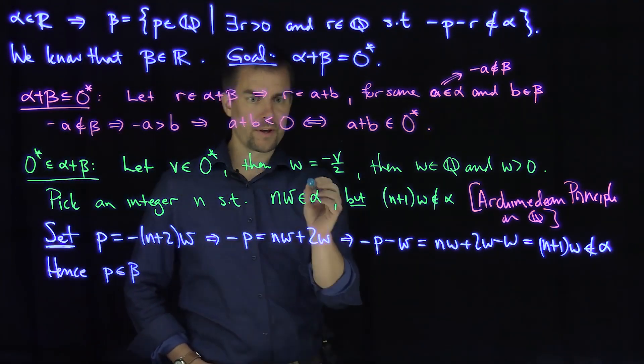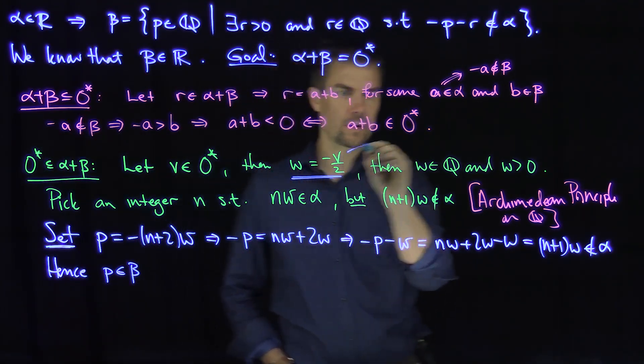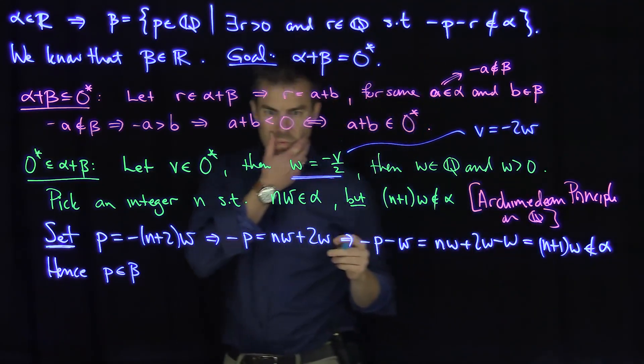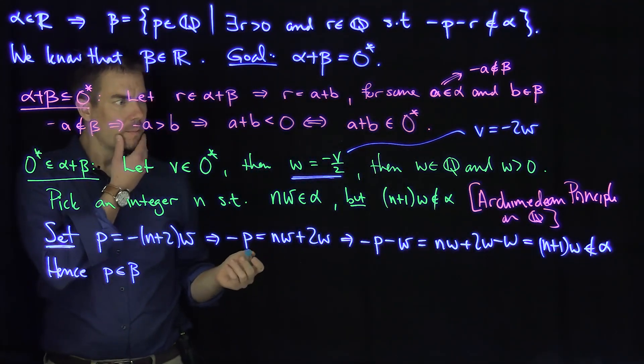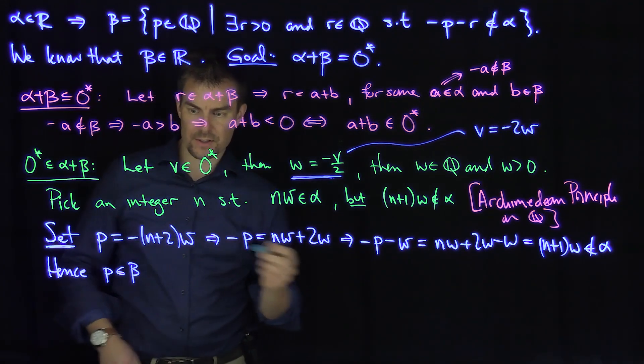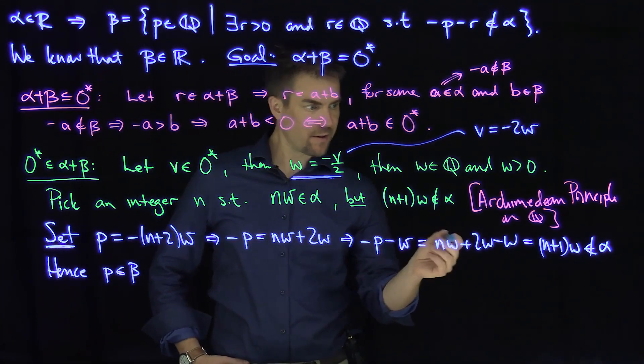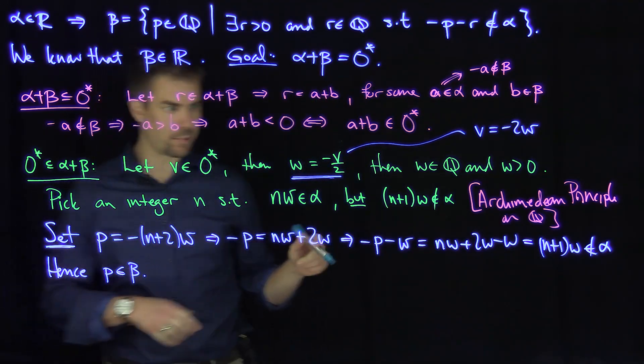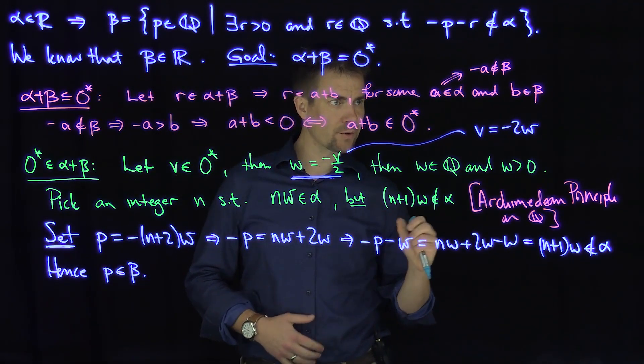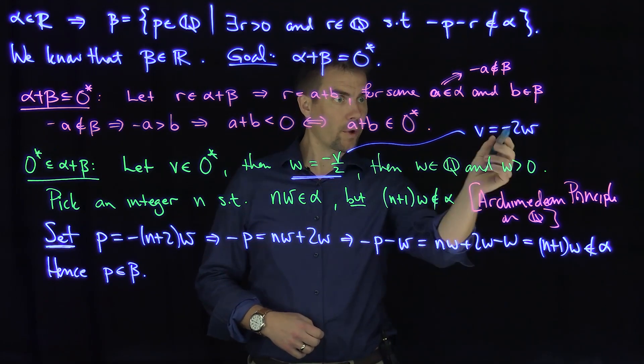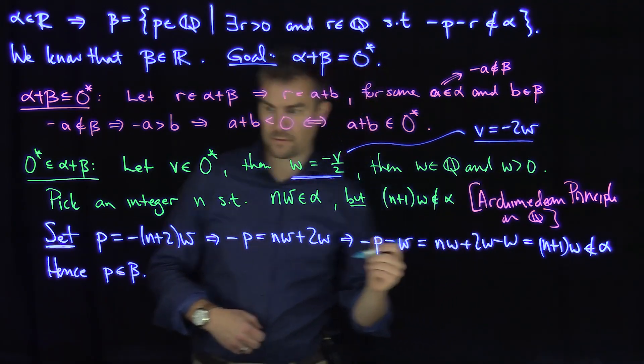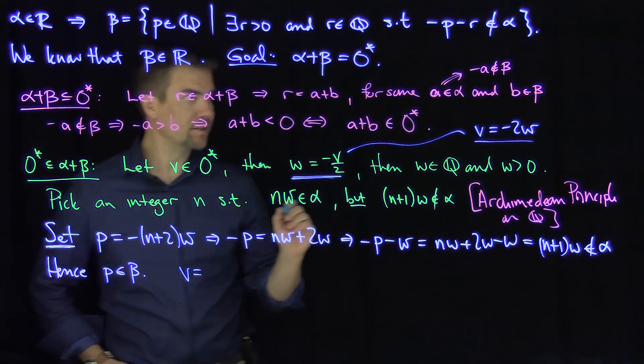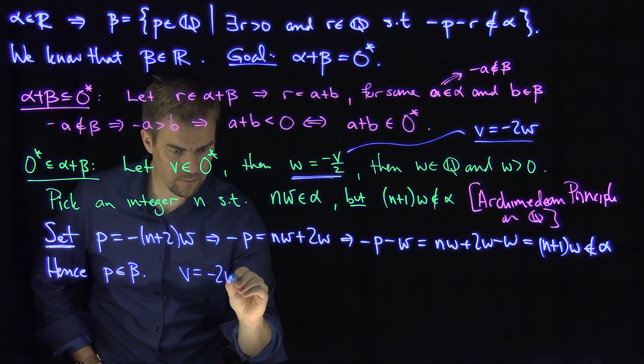Now let's go back to v. So what is v? Our v, according to this, is really negative 2w. So v is negative 2w. So if we look at this p over here plus n w, so hence p is in beta. And so now let's write a formula for v. So what's v equal to? So v is equal to negative 2w.